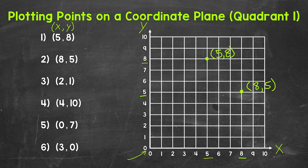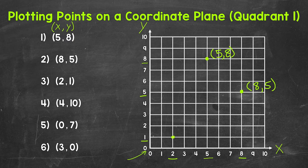Let's move on to number 3, where we have 2, 1. So over 2, up 1. 2 is the x-coordinate and 1 is the y-coordinate. So 2, and then 1 — over 2, up 1. We plot this point right here, so again, 2, 1.